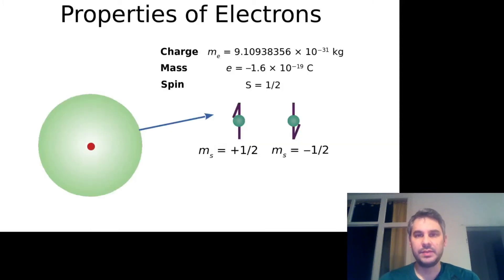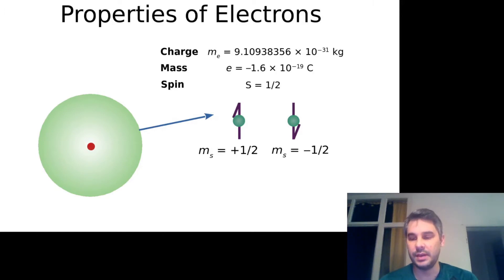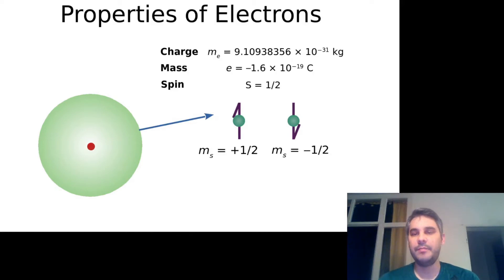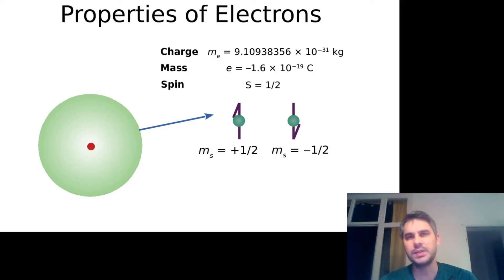Electrons have several properties, one of which is charge, mass, and spin. The electron mass is 9.1 times 10 to the power of minus 31 kilograms, its charge is minus 1.6 times 10 to the power of minus 19 coulombs, and its spin is one half. Spin one half means that electrons can have two projections of the spin value: ms equals plus one half and ms equals minus one half.